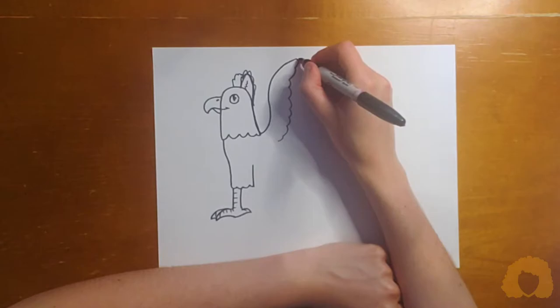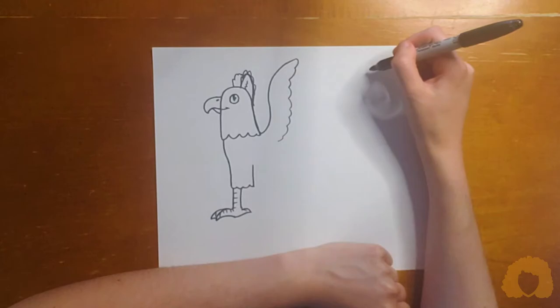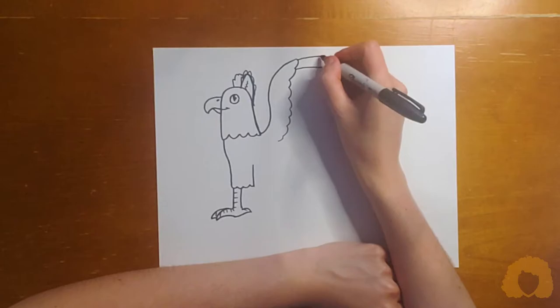My next part is I'm going to do something called secondaries. Wings are made out of three parts: the tertiaries, secondaries, and primaries.